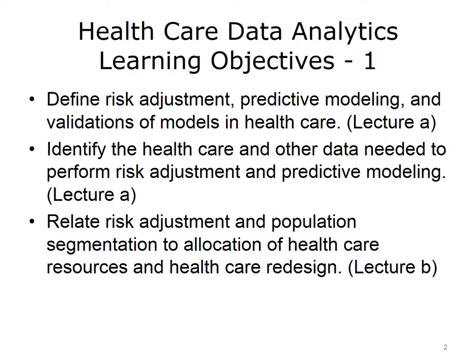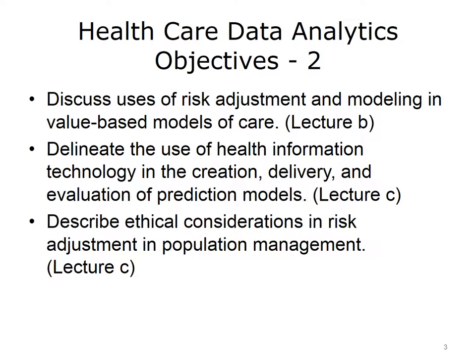The objectives for this unit, Risk Adjustment and Predictive Modeling, are to define risk adjustment, predictive modeling, and validations of models in healthcare. Identify the healthcare and other data needed to perform risk adjustment and predictive modeling. Relate risk adjustment and population segmentation to allocation of healthcare resources and healthcare redesign. Discuss uses of risk adjustment and modeling in value-based models of care. Delineate the use of health information technology in the creation, delivery, and evaluation of prediction models. And describe ethical considerations and risk adjustment in population management.